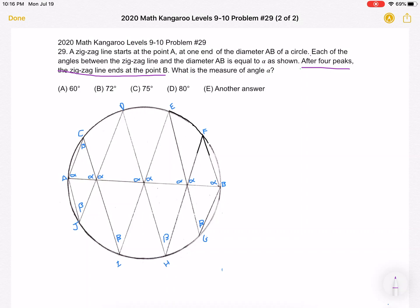I also reflected the semicircle given to us in the problem to form a complete circle. And I labeled the vertices so that you can better see what it is I am referring to. In the problem, we already knew that each of the angles between the zigzag line and the diameter AB is equal to alpha.